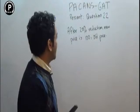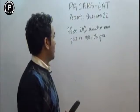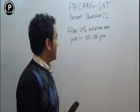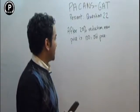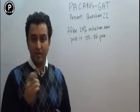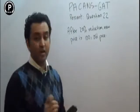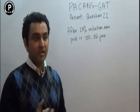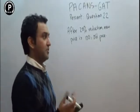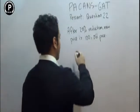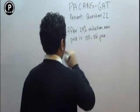Welcome to Peckin's GAT question number 22. After a 20% reduction — reduction means decrease — the new price is 100. What is the old price? We don't have the old price here, so we suppose it is x.